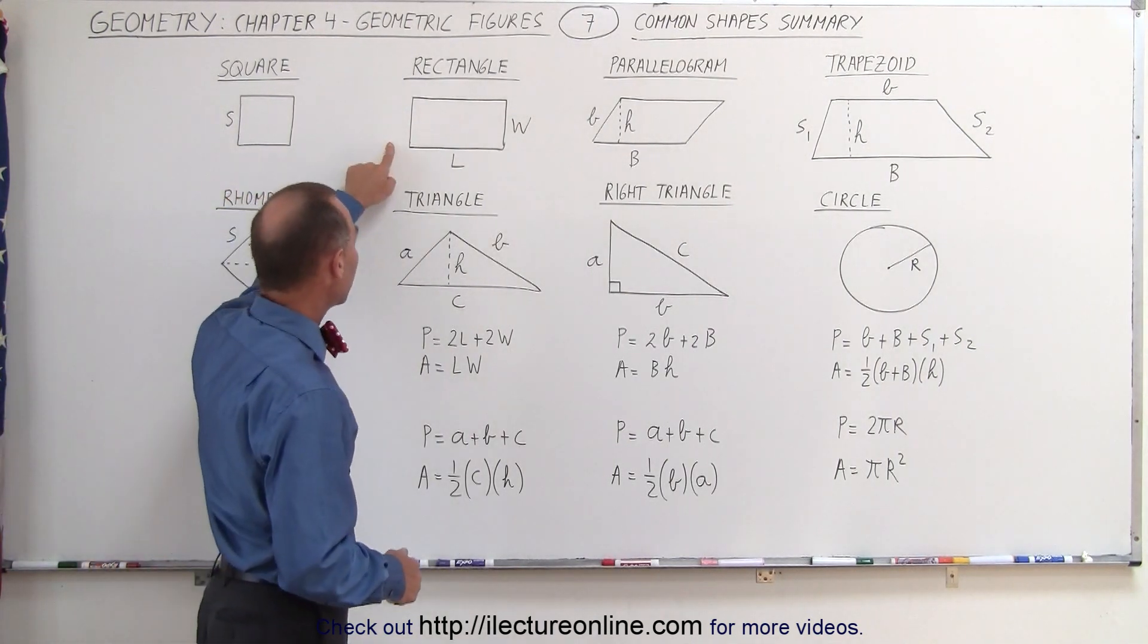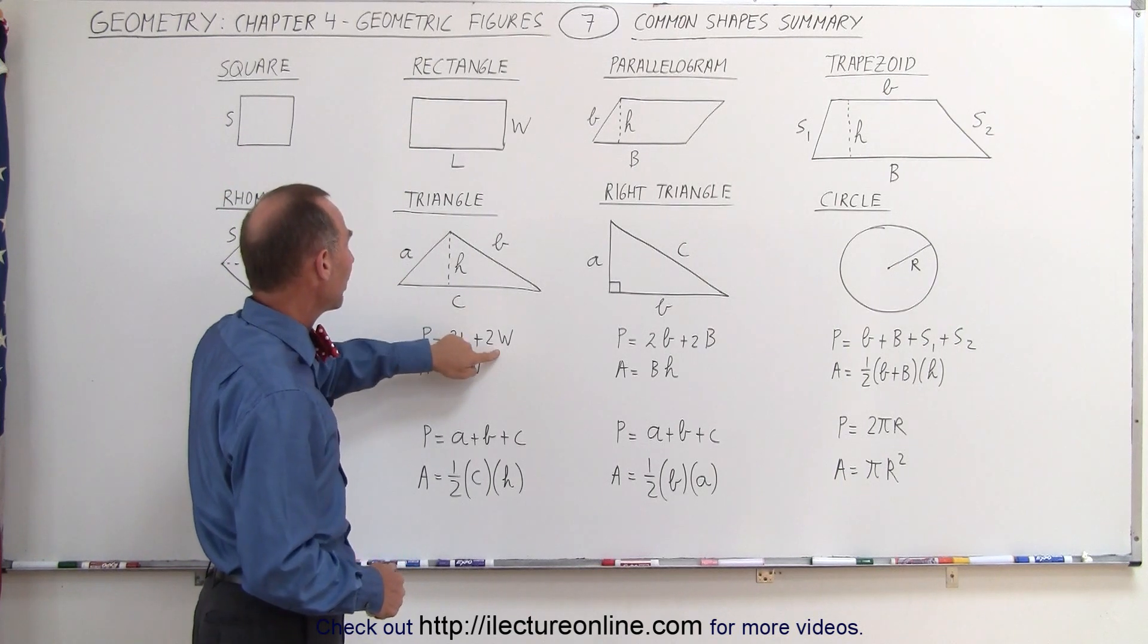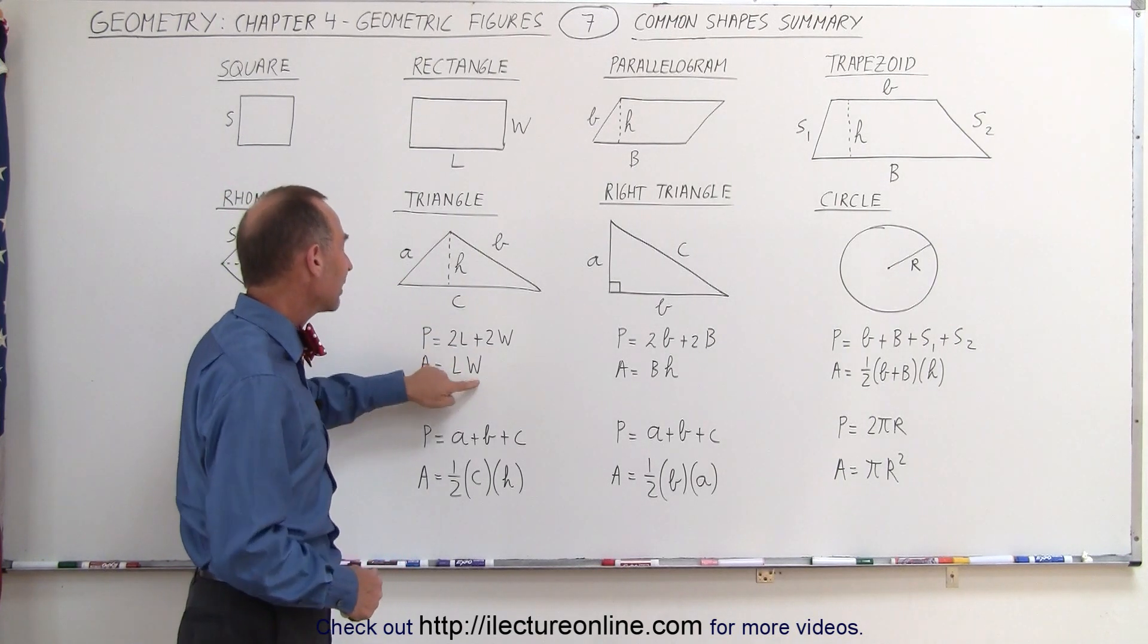For rectangle, the perimeter is twice the length plus twice the width. For the area, it's the length times the width.